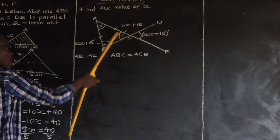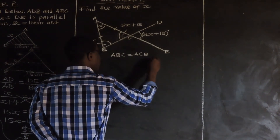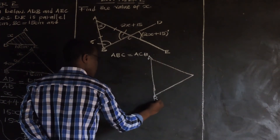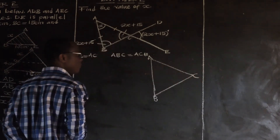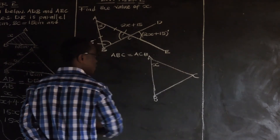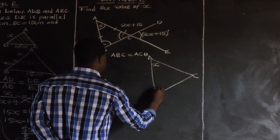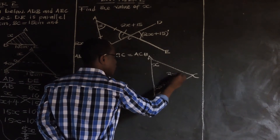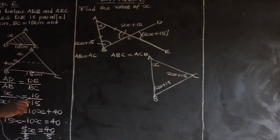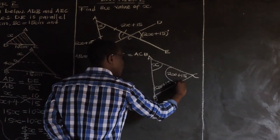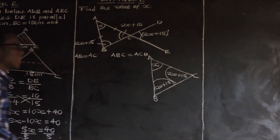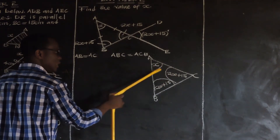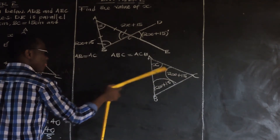Our triangle looks like this: vertex A at top, B and C at the base. Angle BAC is X, angle ABC is 2X plus 15, and angle ACB is 2X plus 15. We know that the sum of interior angles of a triangle adds up to 180 degrees.